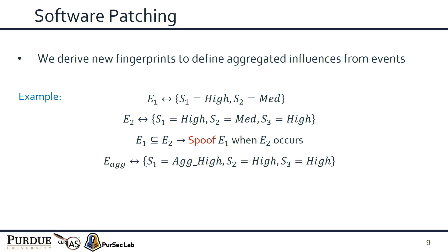In software patching, we derive new physical fingerprints to define the aggregated influences from multiple events. For example, if E1 influences two sensors and E2 influences three sensor readings, and the sensors influenced by E1 are a subset of E2's, an adversary could spoof E1 when E2 physically occurs. To prevent this, we define a new fingerprint based on the aggregated influence of both events. At runtime, when two notifications are received at the IoT hub, it checks only the aggregated physical fingerprint. Since E1's individual influence is lower than the aggregated influence, the new fingerprint detects the spoofing attack.